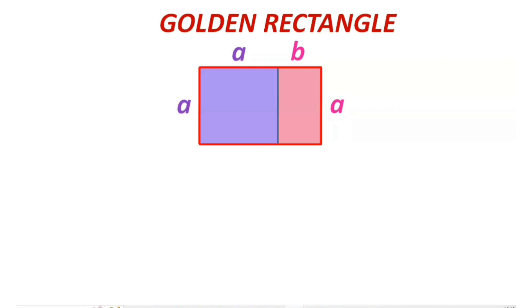For rectangles of this shape, the ratio of the long side to the shorter side, that means (a + b) is to a, is roughly equal to 1.615 is to 1. This ratio is very close to what is known as golden ratio.